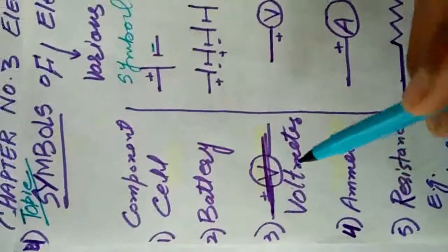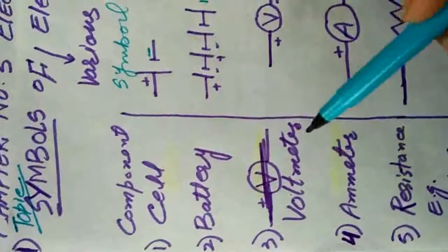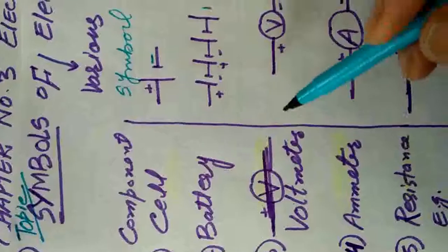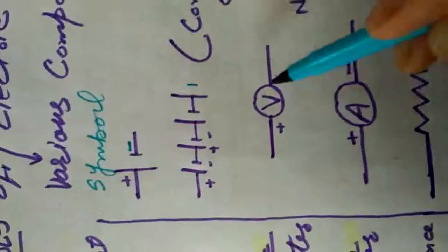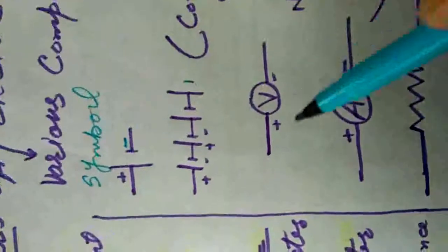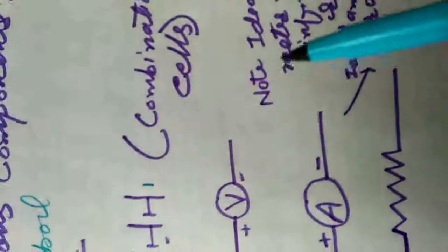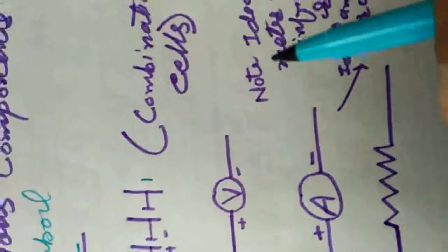The third component is the voltmeter. A voltmeter is a device which measures potential difference — it is used to measure voltage. We represent the voltmeter by this symbol. An important point to remember: an ideal voltmeter has infinite resistance.